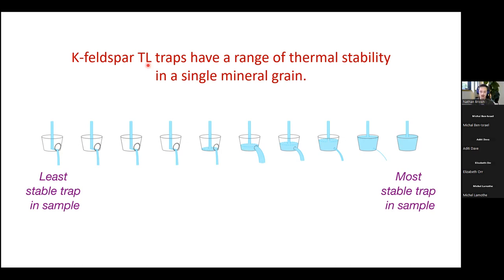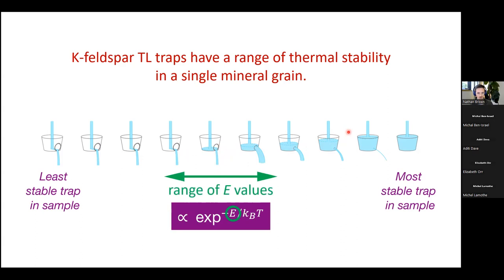And what you often see is the least stable of those may be totally empty for a given thermal history. And the most stable might be totally saturated. And in between, you have this dynamic range where some of the traps are beginning to fill and have ages associated with them. So this is where you can learn really rich information about a sample's thermal history. Why is this? Well, one explanation is there's a range of these activation energies present in a sample.